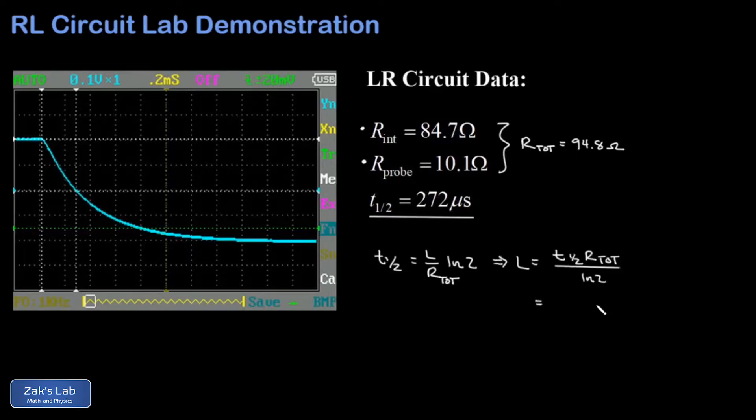We plug in our numbers. Remember micro means 10 to the negative 6, so I could just write this in expanded form as 0.000272 seconds. Our total resistance was 94.8 and we're going to divide by natural log 2. This gives me 0.0372 henrys, which we could write as 37.2 millihenrys. Now compared to the nominal value of 33 millihenrys, I get an error of 0.127 or about 13%.